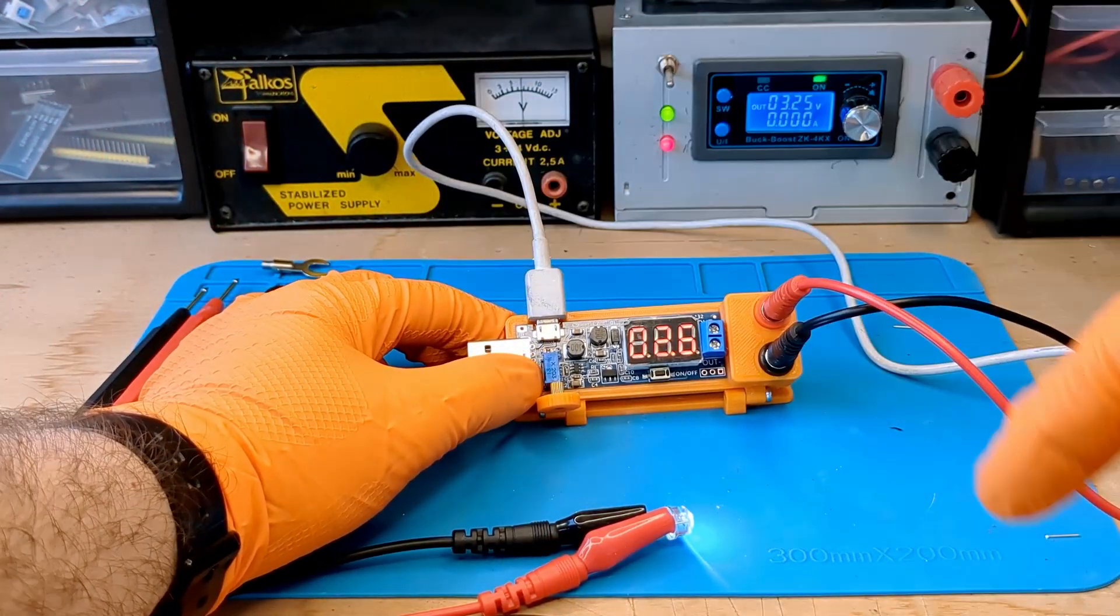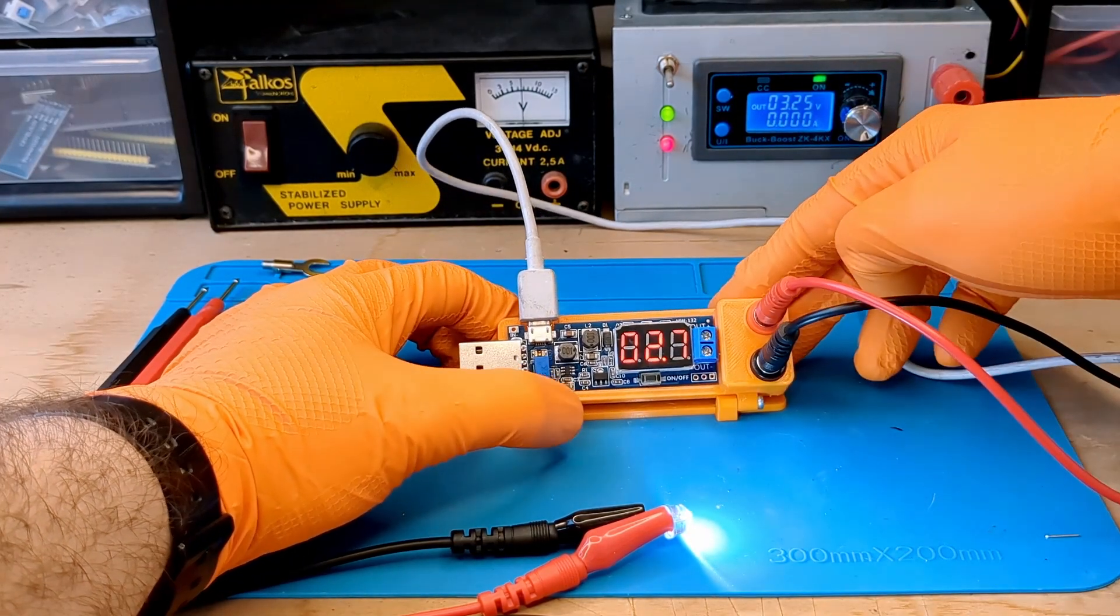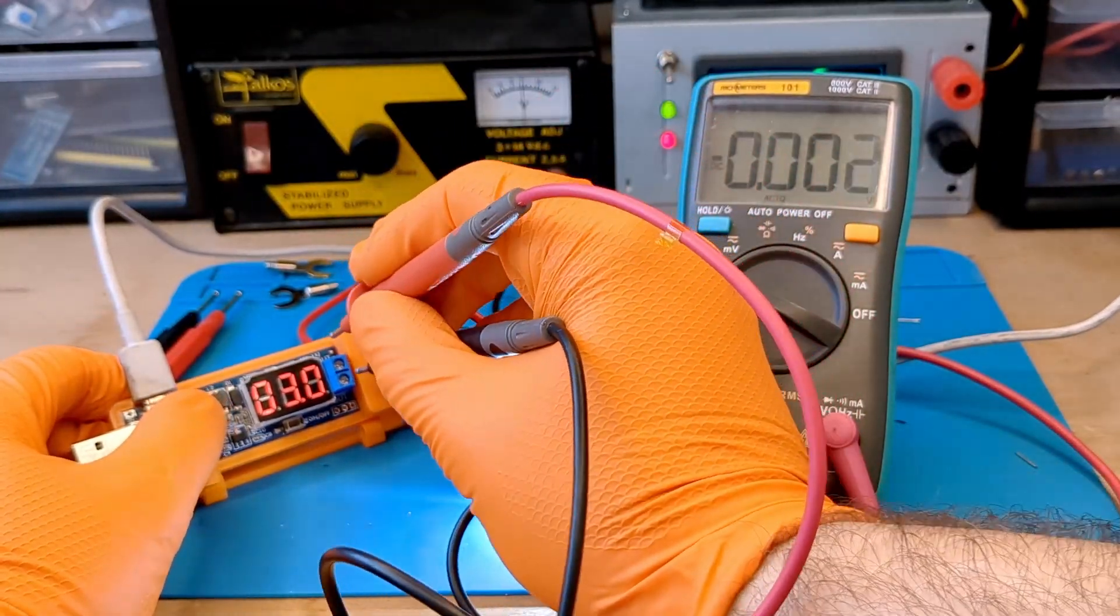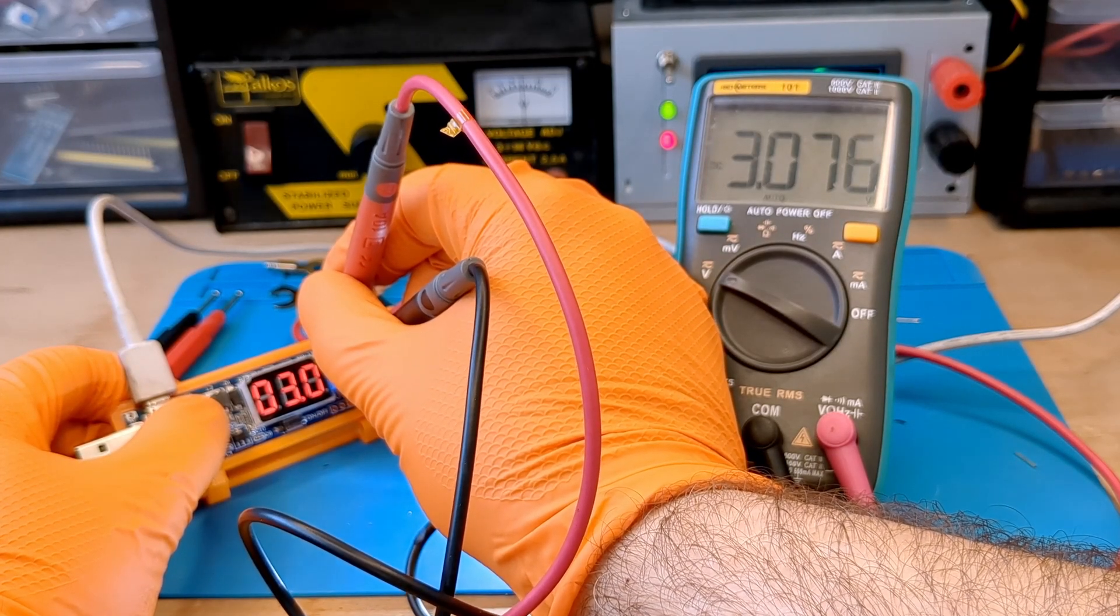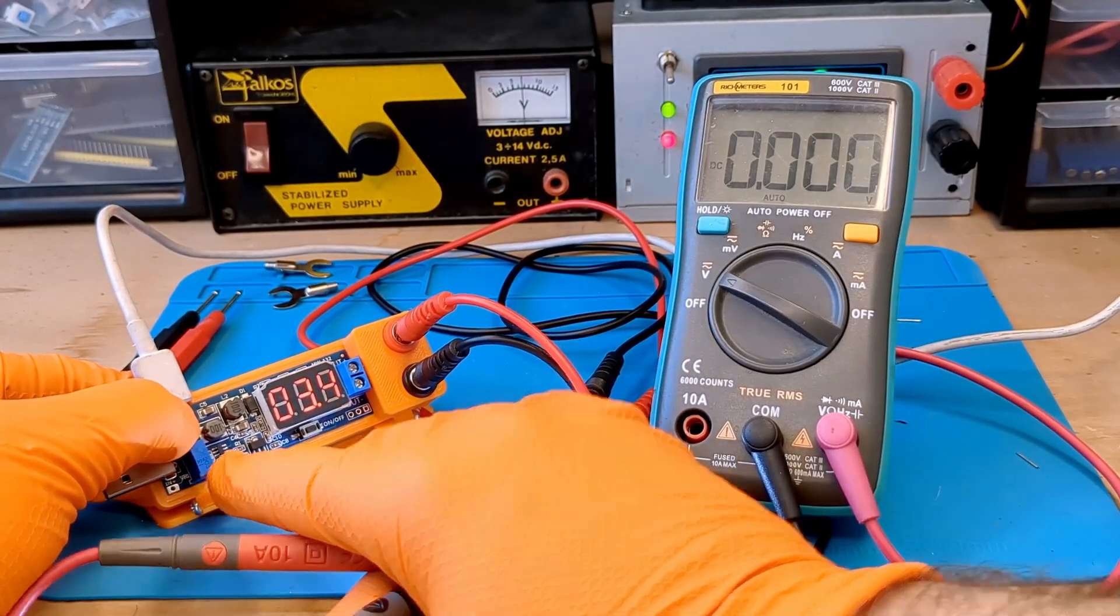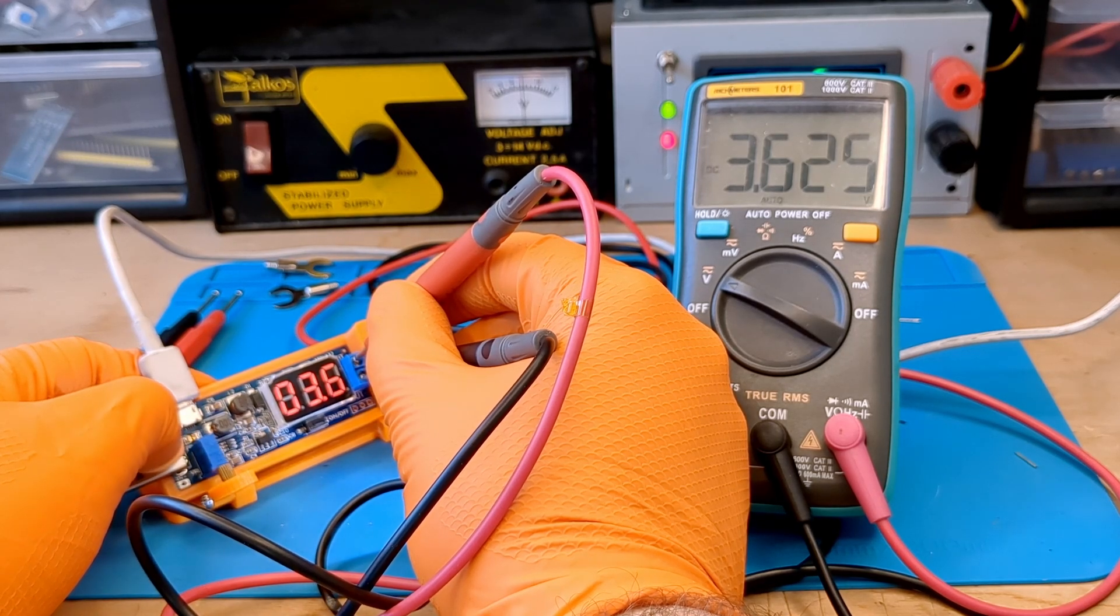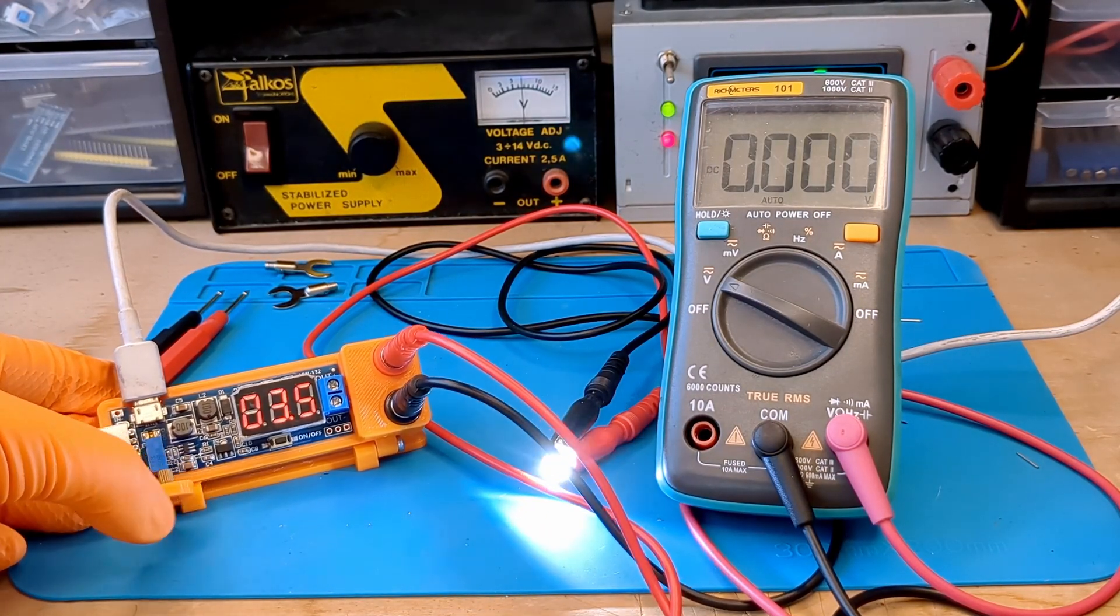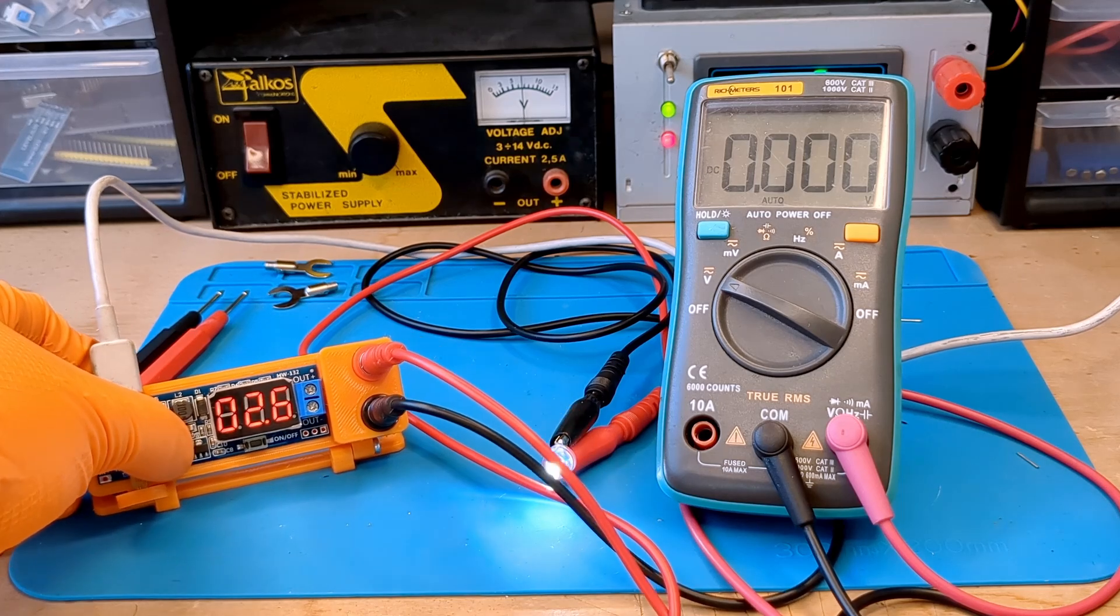The power supply is ready for final testing. The LED lights up and the potentiometer changes the light intensity, indicating correct connections. Now let's check if the voltage displayed is correct. The power supply shows 3 volts while the multimeter shows 3.075 volts. Let's try another measurement. The power supply shows 3.6 volts and the multimeter 3.625 volts. There is a voltage discrepancy of less than 0.1 volts, which may be due to the display rounding the value. Despite this, it still performs well as a backup power supply or for hobby use.